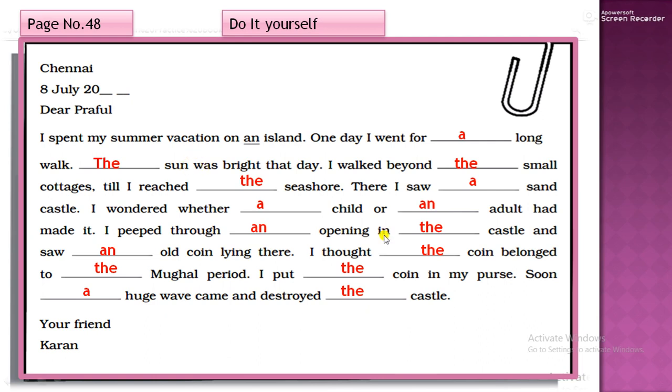So Chennai, C capital. Date you will write only like this. First of all, date. Then month. And then year. 20, 21. Date you can write present date. On which date you will solve it. So dear Praful. Now, Karan is writing to Praful. So he will not write his name. He will write his friend's name. Dear Praful. D capital. P capital.